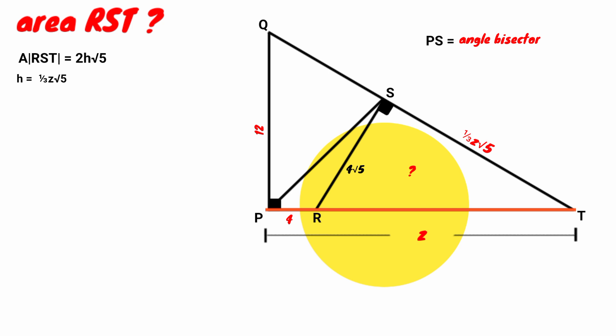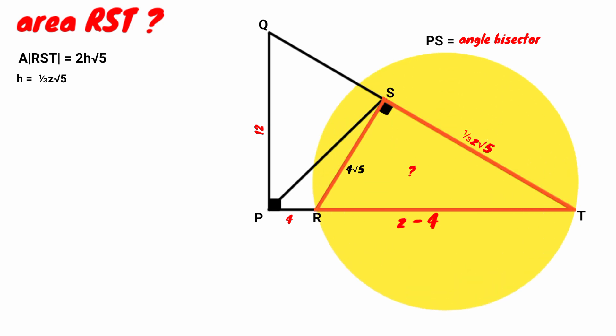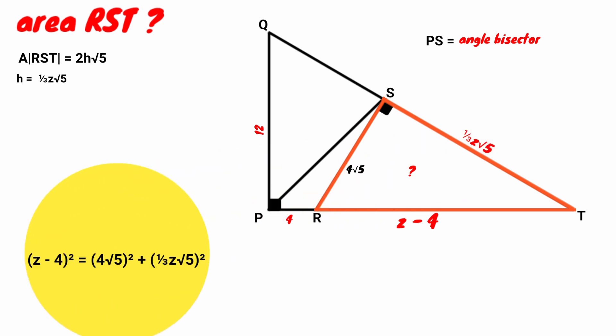Now, the length of side PT is assumed to be Z. But one part of it is 4, so the other part must be Z − 4. Looking at this right angle triangle, with hypotenuse Z − 4, we can apply the Pythagorean theorem: (Z − 4)² = (4√5)² + ((1/3)Z√5)².